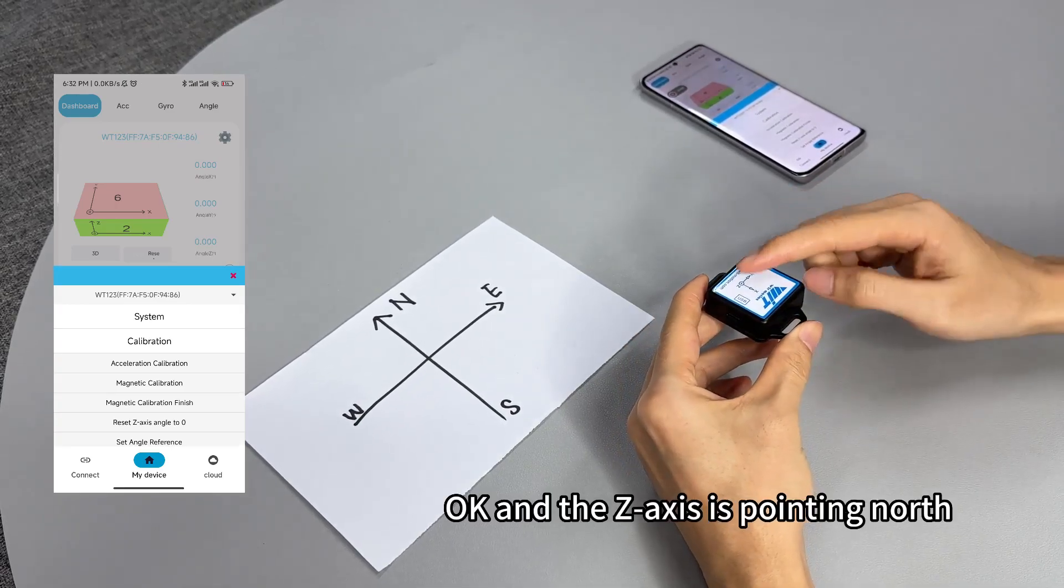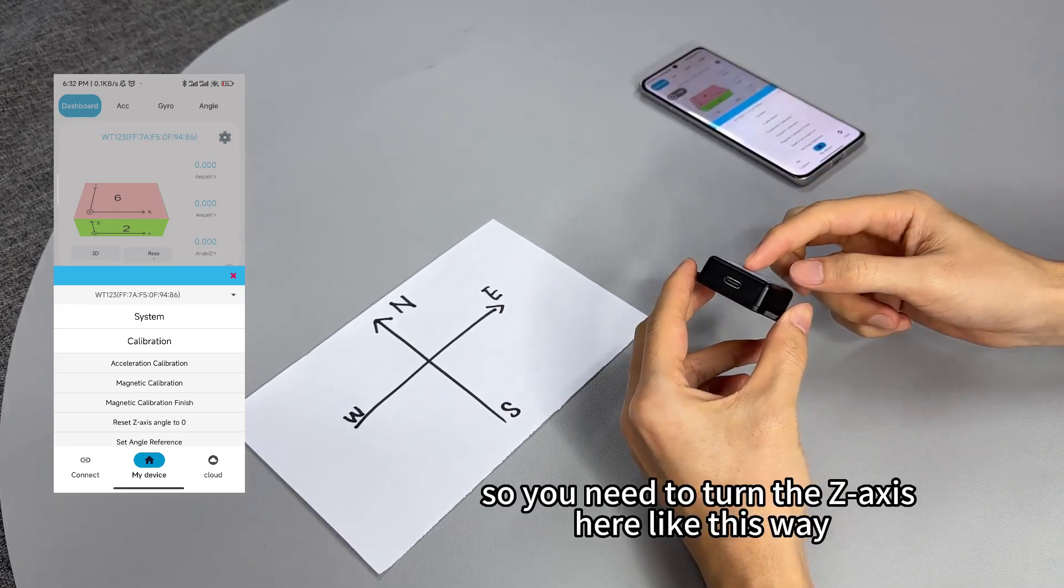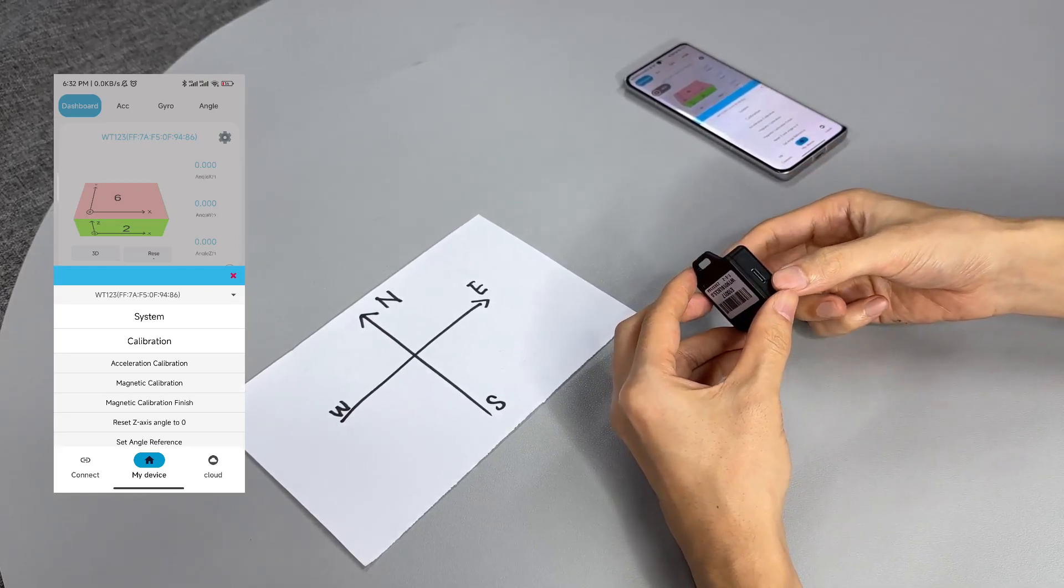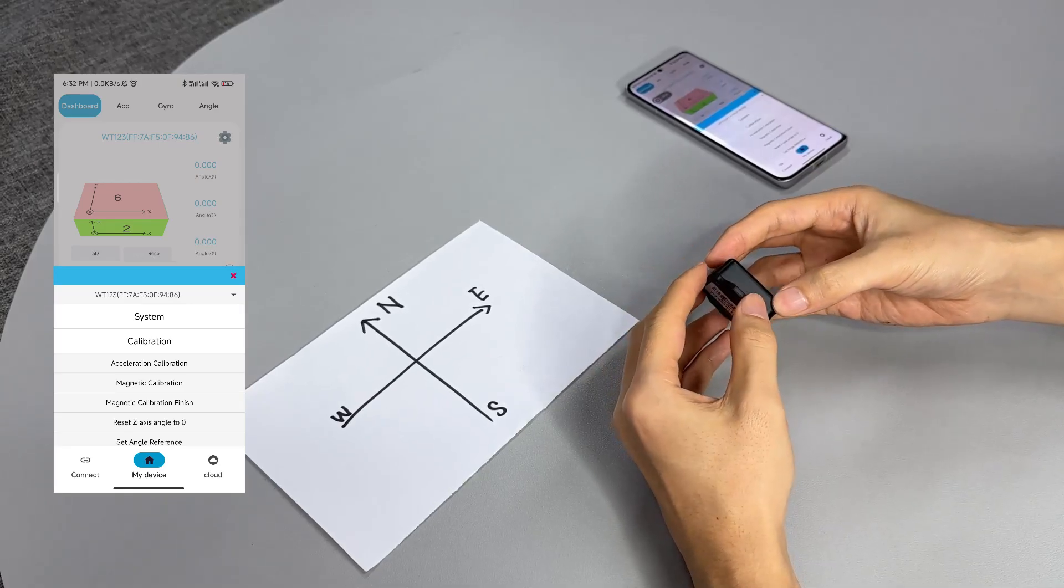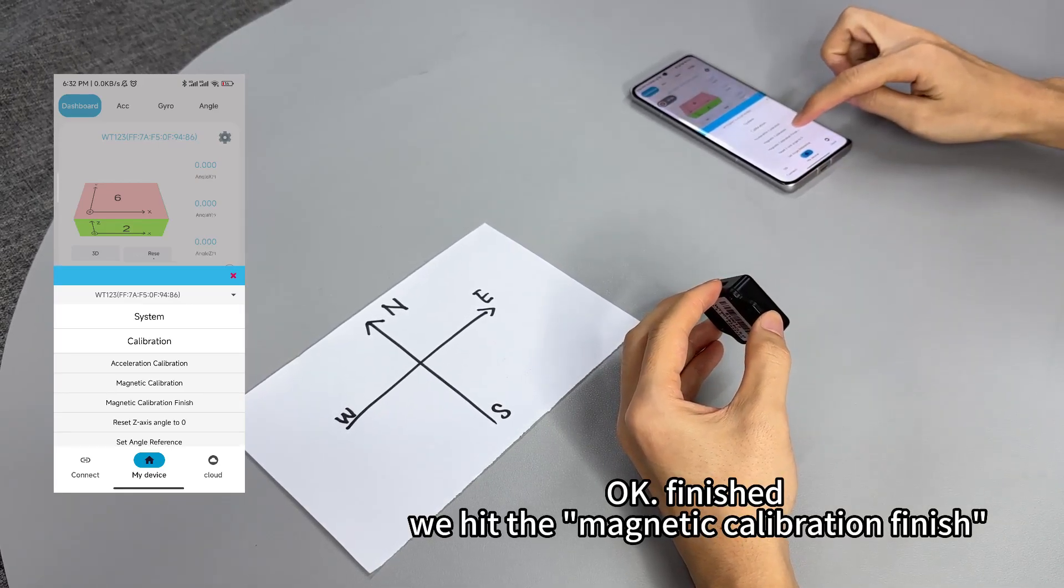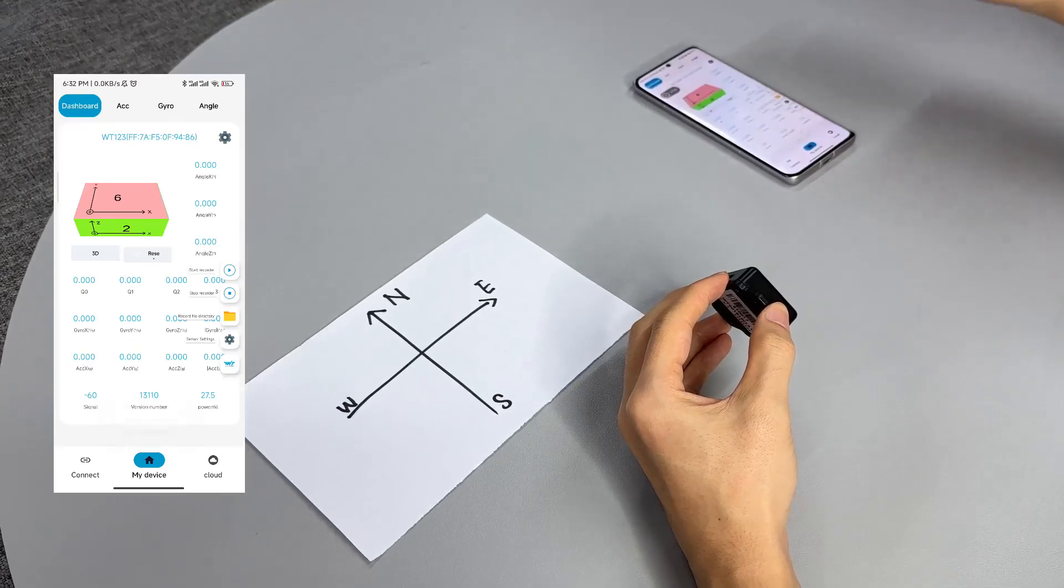Okay, and z-axis is pointing north, so you need to turn the z-axis here like this way and the label pointing to the east. Okay, finished. We hit the magnetic calibration finish. Calibrate finished.